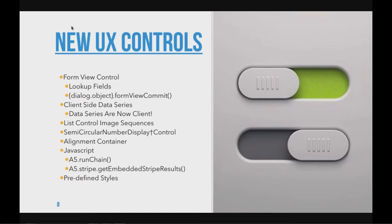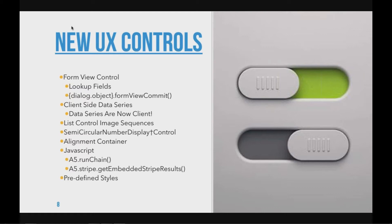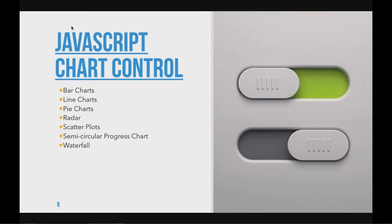There are some other new JavaScript capabilities and new predefined styles. One I want to highlight is A5.runchain. JavaScript is inherently asynchronous, so if you have three JavaScript commands they just run without waiting for each other to finish. A5.runchain is a method that allows you to sequentially run JavaScript commands — run this command, wait till it's done, then do the next one. That's a really powerful new addition for people doing sophisticated multi-step JavaScript command sequences.